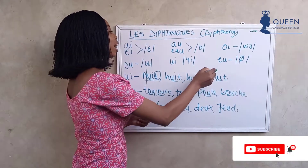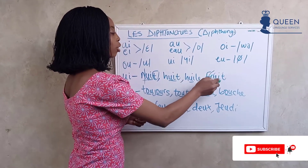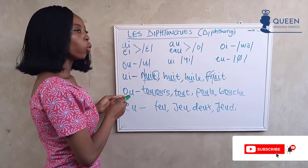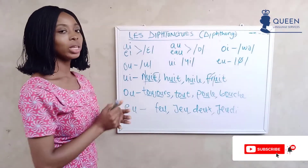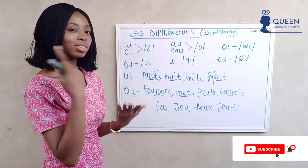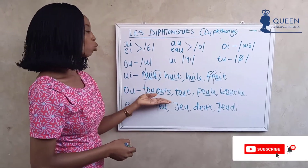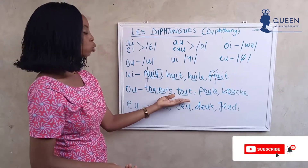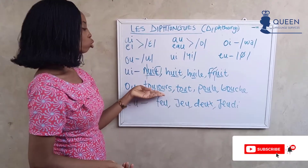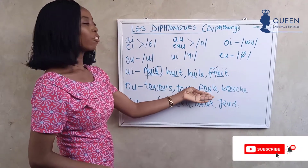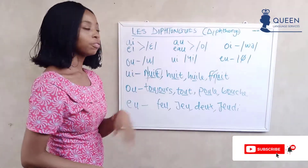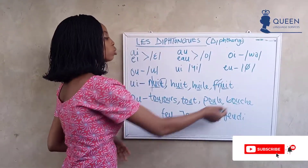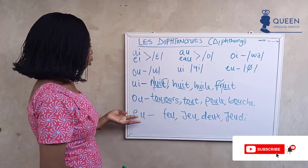When we see 'ou' in French, it gives the sound 'ou'. We have it in words like 'tout', meaning 'all', and 'toujours', meaning 'always'. We also have 'la poule', which is the female of a rooster — a hen. So the 'ou' combination gives a clear 'ou' sound.